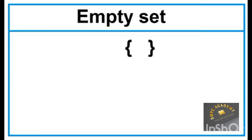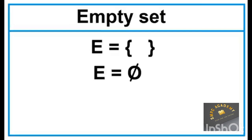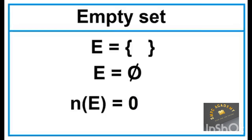This is the symbol of an empty set. Let's name it Set E. Another way of writing Set E is using the null set symbol. The cardinality of Set E is equal to 0. This notation simply means the number of elements.